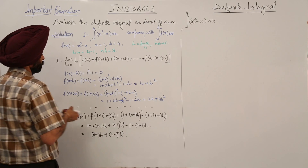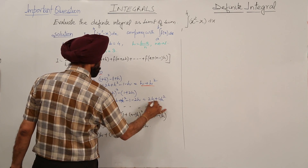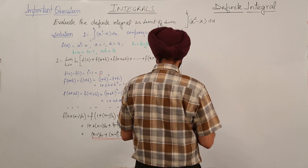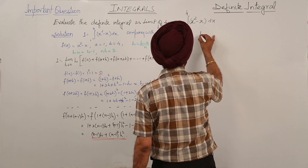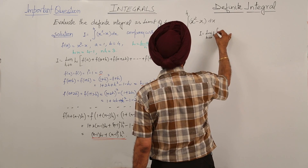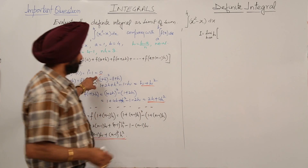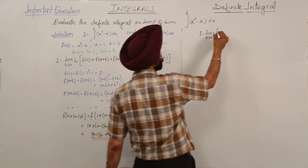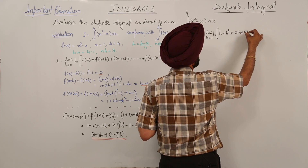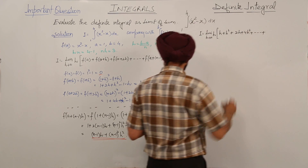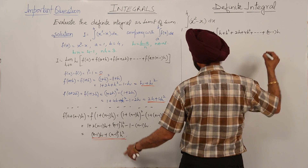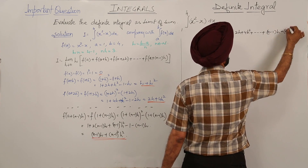Now we have all four terms: first term is 0, second is h + h², third is 2h + 4h², and the last is (n-1)h + (n-1)²h². Putting these terms into the theorem, the integral equals the limit as h→0 of h times [0 + (h + h²) + (2h + 4h²) + ... + ((n-1)h + (n-1)²h²)].